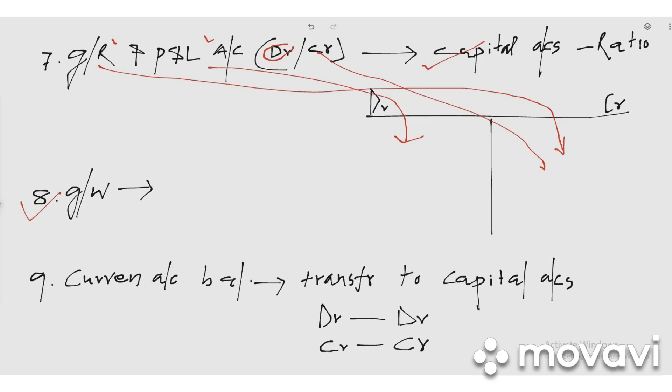Regarding goodwill: treat goodwill just like any other fixed asset. See the amount given in the balance sheet, put it in the asset side, and if any money is realized from goodwill, put it in the opposite side as 'By Cash.' If the question is silent about goodwill, do not write anything — simply ignore it.